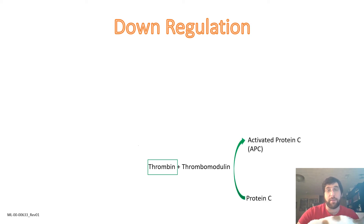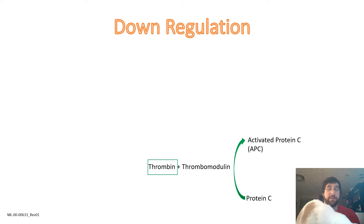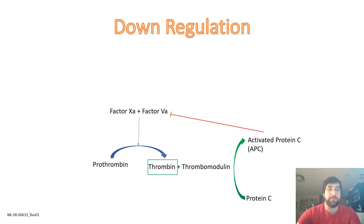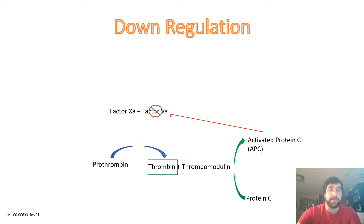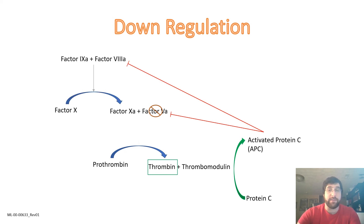One of the proteins that thrombin will complex with is thrombomodulin. So bound, thrombin has a drastically increased affinity — roughly 1,000-fold — for activating protein C. Protein C, along with free protein S on the platelet surface as cofactors, degrades active factor 5A inhibiting the activation of prothrombin to thrombin. It also degrades active factor 8A, inhibiting the formation of factor 10A, for increased efficacy of thrombin downregulation.